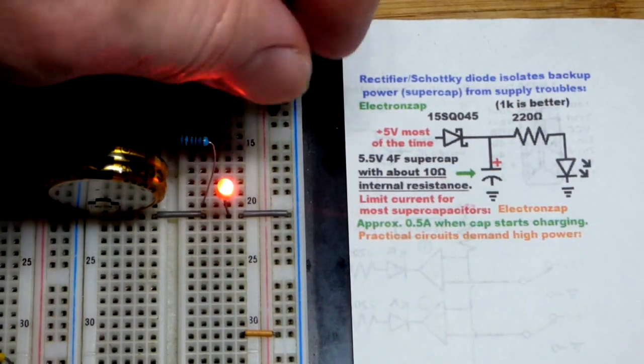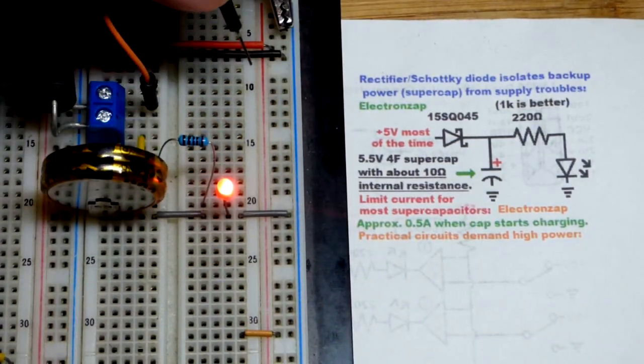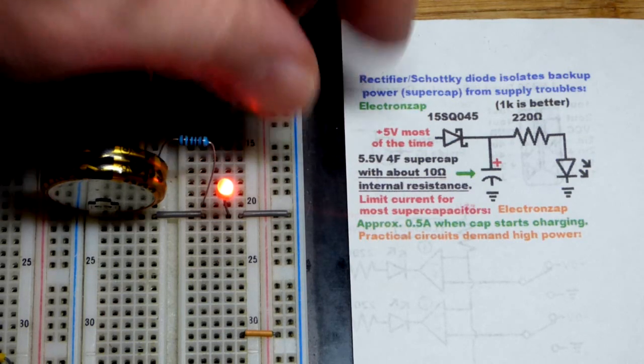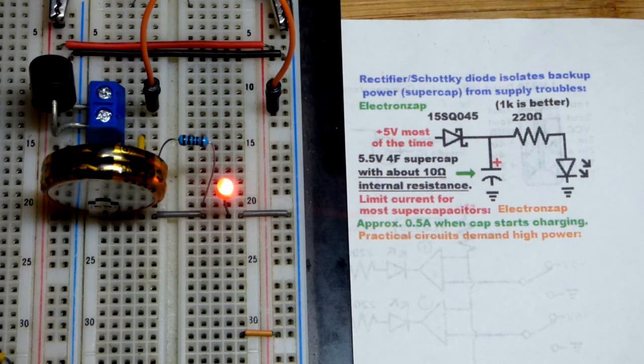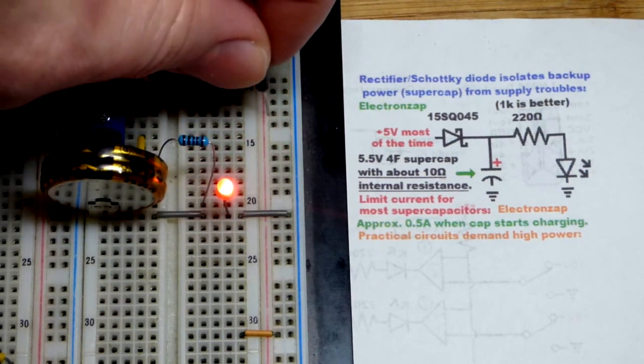So same thing with this one and now if we briefly lose power or something you can see that the super capacitor will jump in and power a light load in this case.